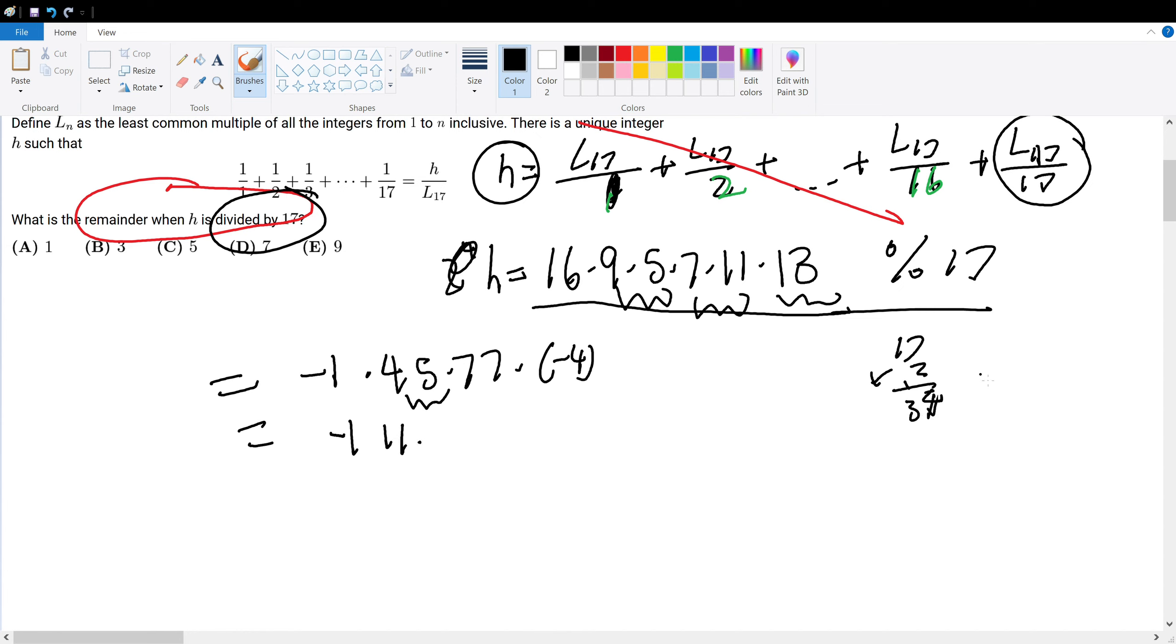So, that would give us 36 times 11. So, let's, 36, you can have 17 times 2, 34, so that's 2 times 11, mod 17, which is 22 mod 17, which is 5.